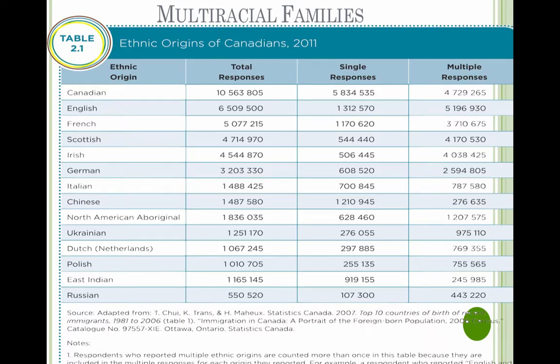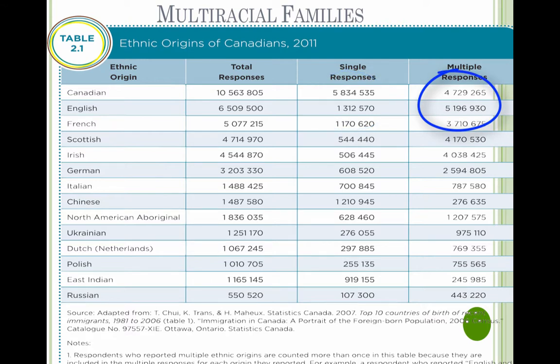We have an example here from the census of Canadian populations, where we look at the total number of responses of people who identified as Canadian, English, French, Scottish, Irish, German, Italian, Chinese, North American Aboriginal, Ukrainian, Dutch, Polish, East Indian, and Russian — showing both single responses, where someone said 'I am Canadian' only, and multiple responses, where people said 'I am both Canadian and French' or 'Canadian and German.' We see a vast number of responses across these categories.